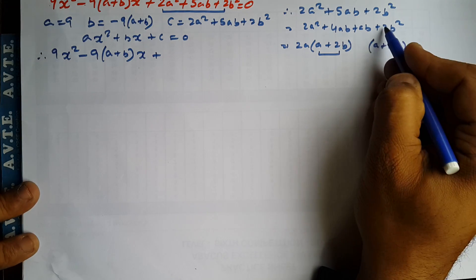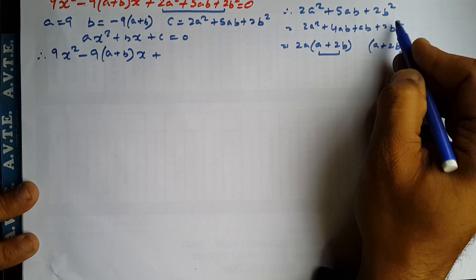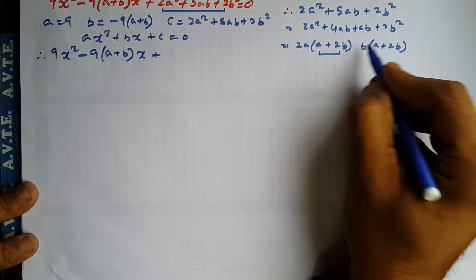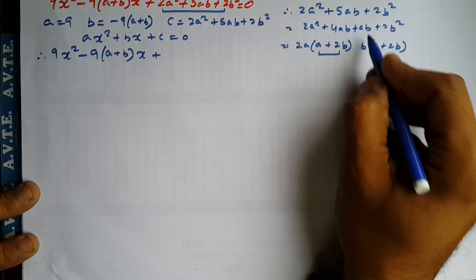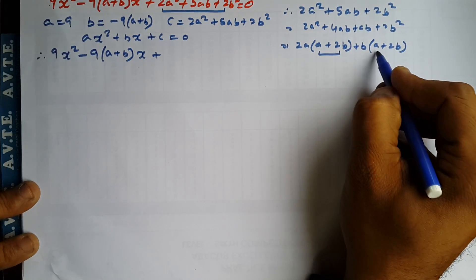Now you divide the last term 2B square by the last term. You will get a B. Check it again. B into A, the sign is plus.